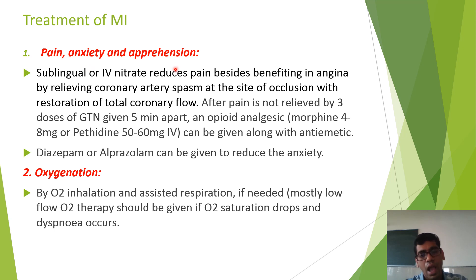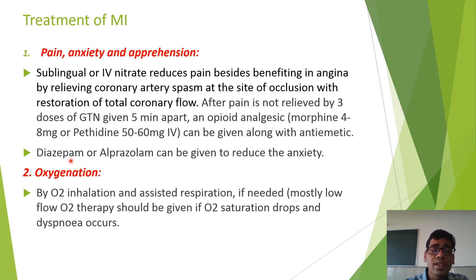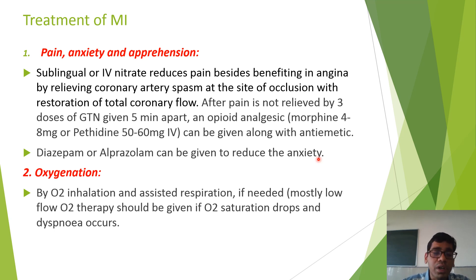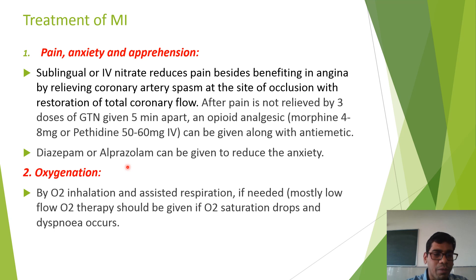Opioid analgesics can also reduce anxiety and apprehension. If anxiety and apprehension persist, benzodiazepines like diazepam or alprazolam can be given, as anxiety is manifested through sweating, palpitation, and tremor which may further deteriorate the condition. Regarding oxygenation, oxygen should be given by inhalation or assisted respiration if needed — low-flow oxygen therapy of two to four liters per minute is given if oxygen saturation is dropping.